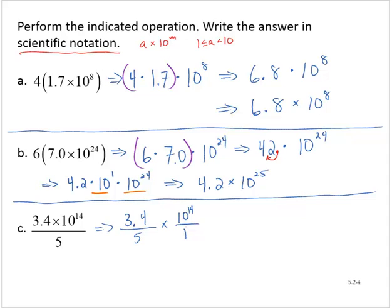Now 3.4 divided by 5, if you go through the arithmetic, that's 0.68. So we'd have 0.68 times 10 to the 14th.